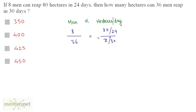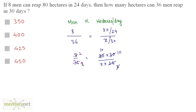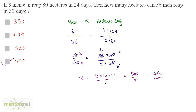Since it is a direct proportion, we directly equate the ratios: 8 by 36 equals 80 times 30 by x times 24. Simplifying: 3 times 10 is 30, 3 times 8 is 24, and 8 times 10 is 80. Since 4 twos are 8 and 4 nines are 36, x equals 9 times 10 times 10 divided by 2, that is 900 by 2, which equals 450. The total hectares that 36 men can reap in 30 days is 450 — Option D.